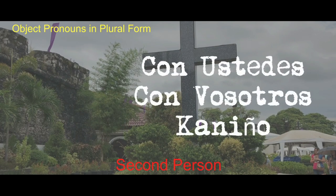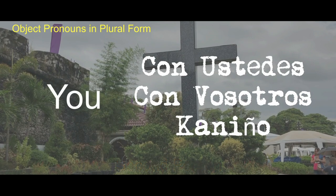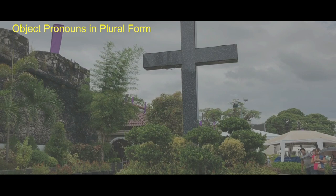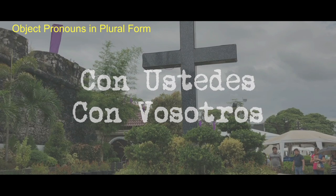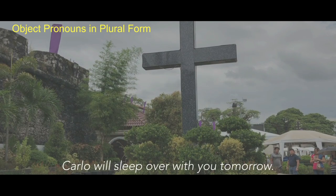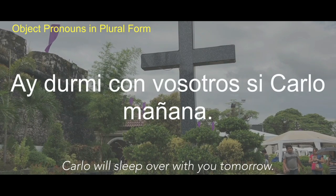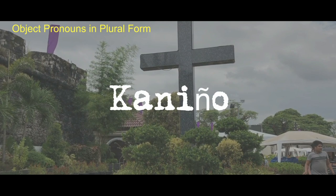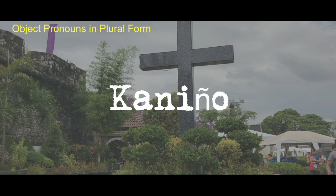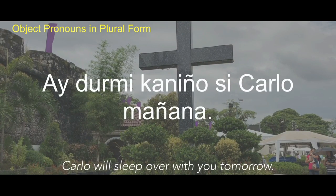Second person object pronouns referring to the listener: we use Con ustedes, Con vosotros, or Kaniño. Con ustedes and Con vosotros can be used interchangeably. When you want to say 'Carlo will sleep over with you tomorrow,' you can say 'Ay durmi con ustedes si Carlo manana' or 'Ay durmi con vosotros si Carlo manana.' Kaniño is used when the person you're talking to is close to you or someone you personally know, though Con ustedes is still preferred. Example: 'Ay durmi kaniño si Carlo manana.'